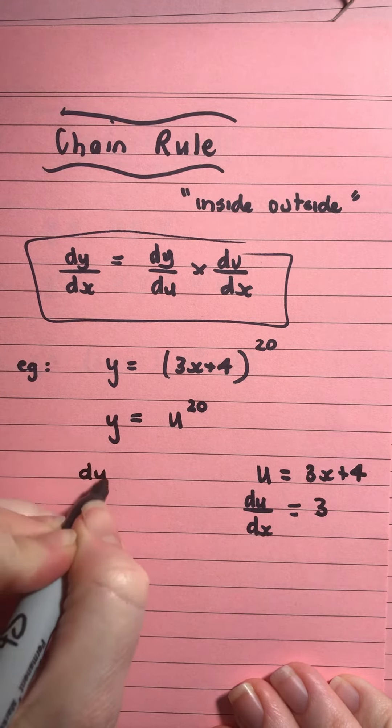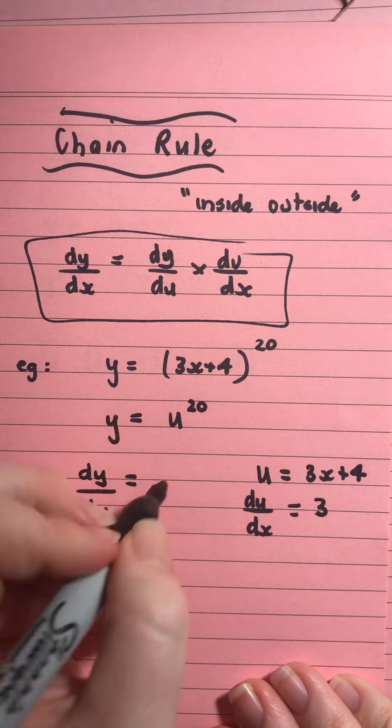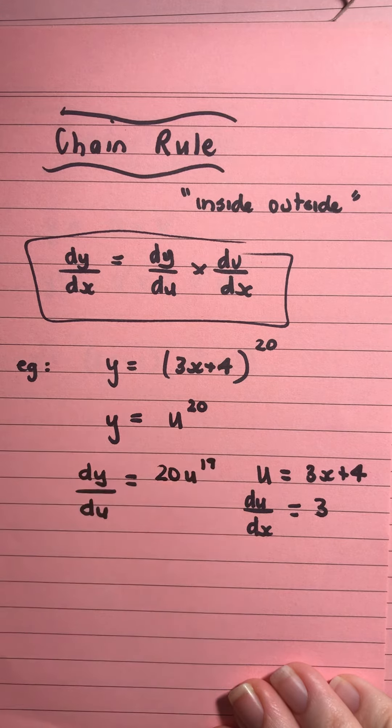Then I come back over here and I write dy on du and I do the derivative with respect to u. So, now I'm going to bring down the 20 and that will become u to the power of 19.